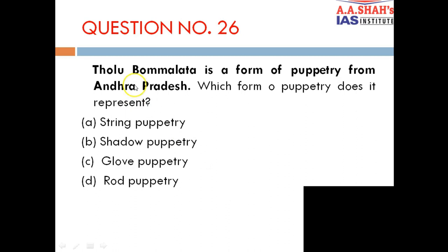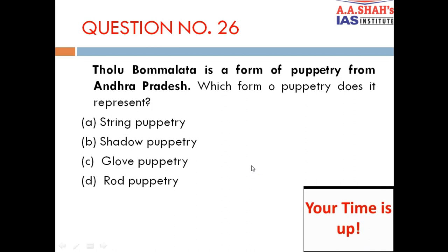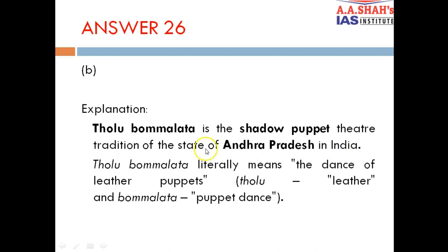Question 26: Tholu Bommalata is a form of puppetry from Andhra Pradesh. Which form of puppetry does it represent? A. String puppetry, B. Shadow puppetry, C. Glove puppetry, D. Rod puppetry. The correct answer is B — shadow puppetry. Tholu Bommalata is a shadow puppet theatre tradition of Andhra Pradesh; it literally means 'dance of leather puppets.'